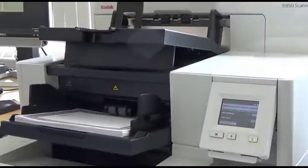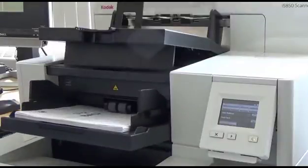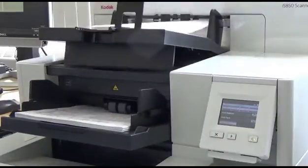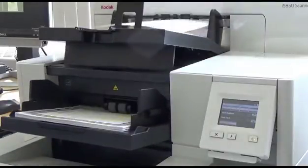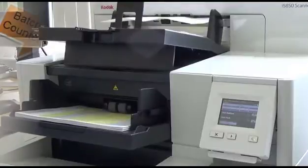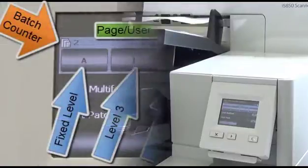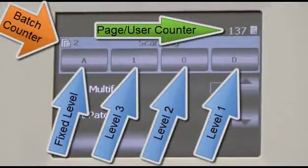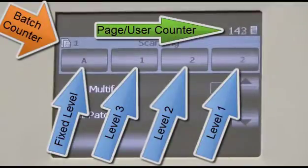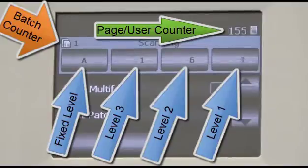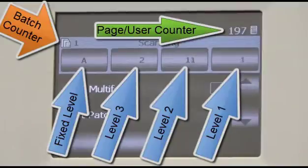As documents and patches are being fed into the scanner, depending on the patch code read, the counter changes. On the display screen, you will see a batch counter and a fixed level, followed by levels 3 through 1. There is also a page or user counter located in the upper right-hand corner.